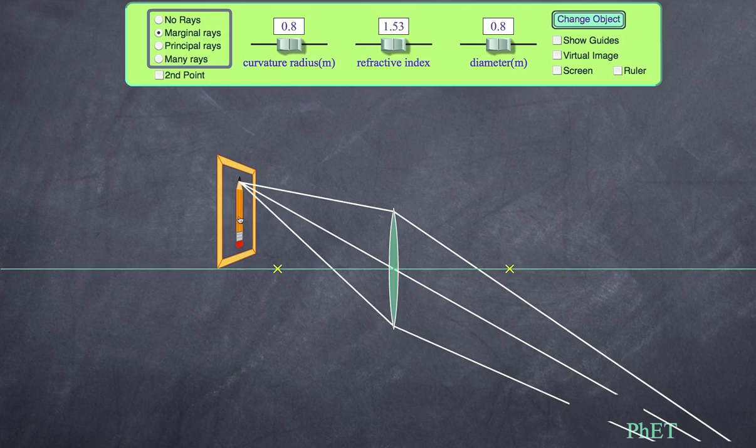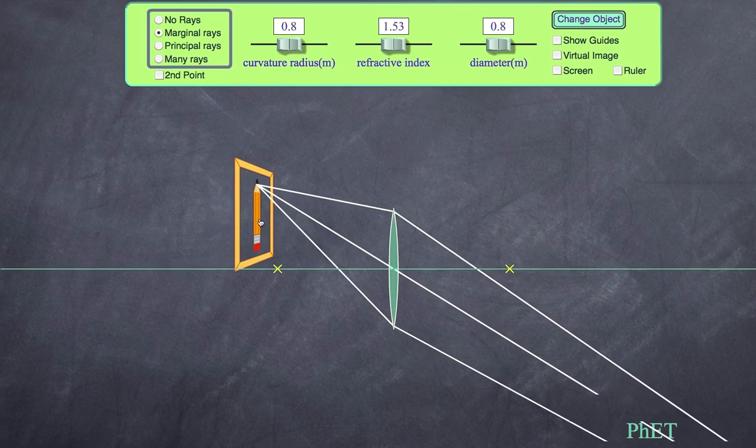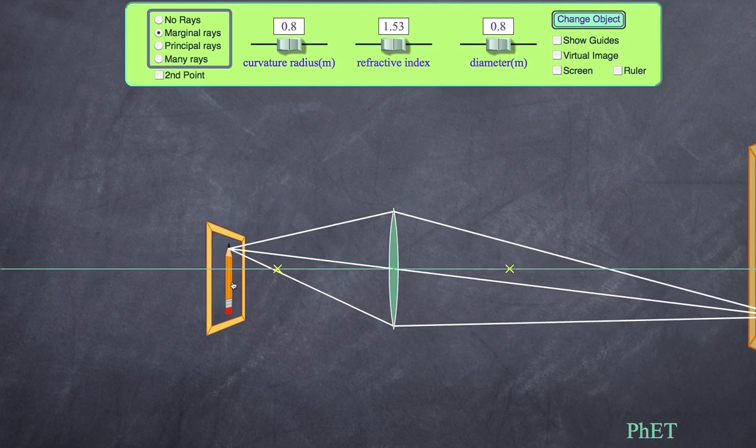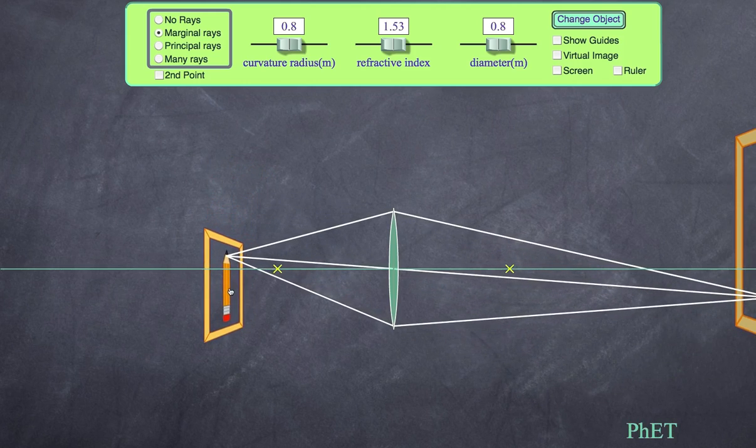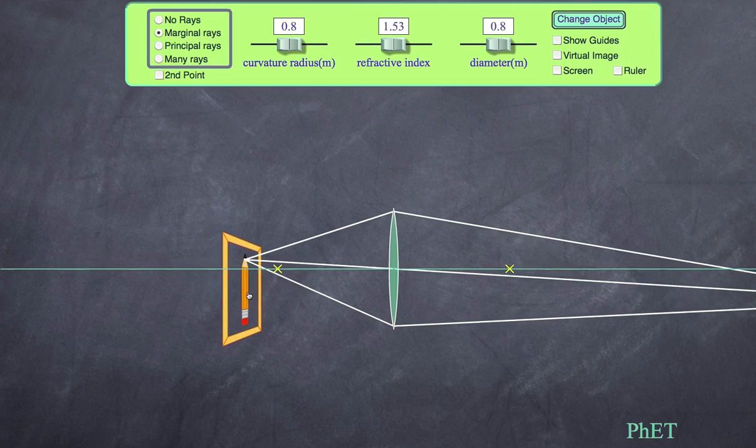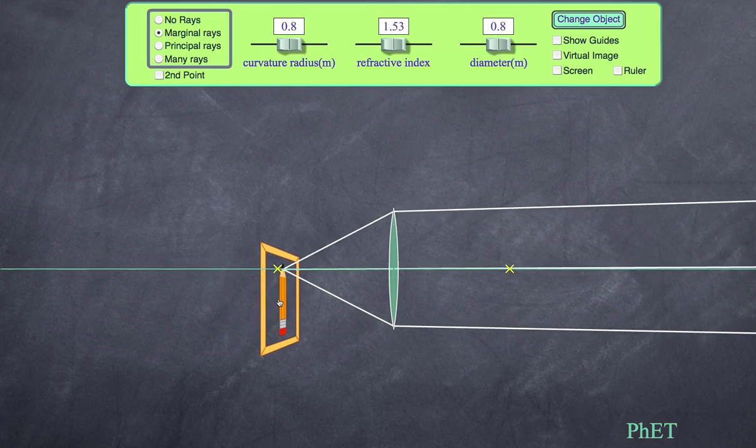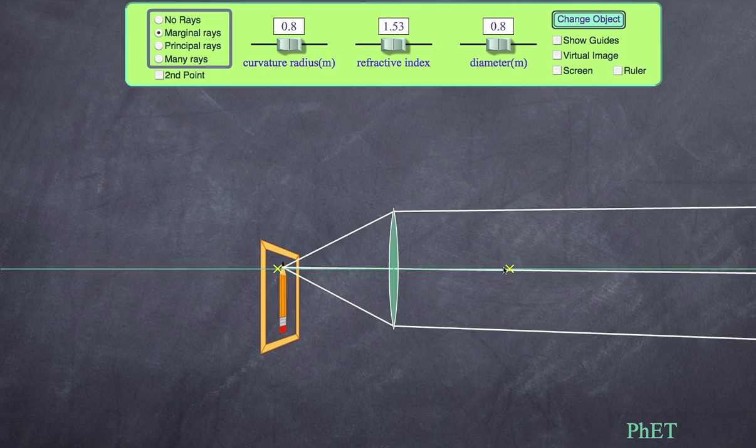What you should know is that image formation will only occur if my object stays beyond the focal point. As I move closer, the image gets so big it goes off the screen. As I move it closer, these two lines start to become more and more parallel. Watch what happens when I move it past the focal point.